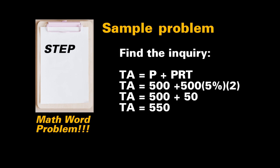TA equals 500 US dollars plus 500 US dollars multiplied by 5% multiplied by two years. TA equals 500 US dollars plus 50 US dollars. TA equals 550 US dollars.